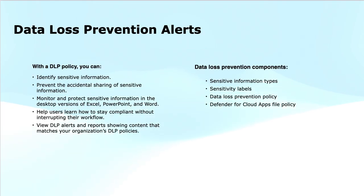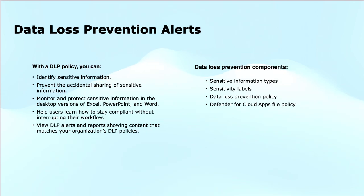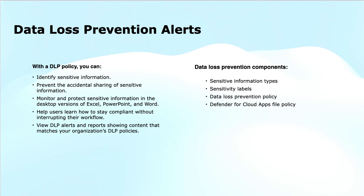Here I will talk about the data loss prevention alerts. First, we need to understand the DLP policies and the different capabilities that we can perform. The DLP can automatically detect sensitive data like credit card numbers, social security numbers, or personal health information in files and emails. This process of identifying this information is called identify sensitive information. It uses built-in classifiers to identify this information based on patterns or specific rules that you can set up.